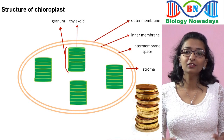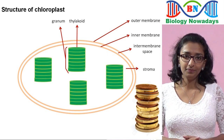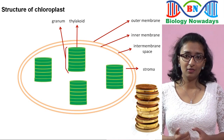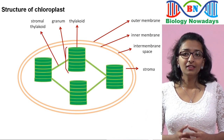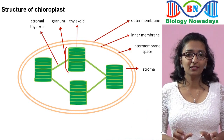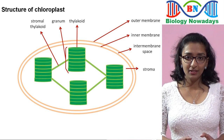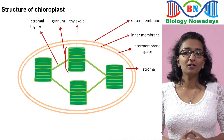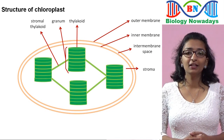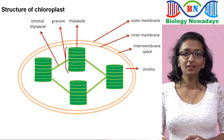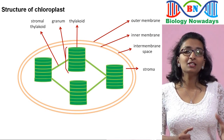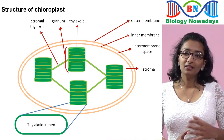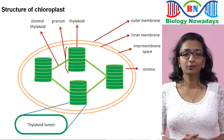These are also called granal thylakoids. There is another type of thylakoids called stromal thylakoids; they join the granum stacks together and make the thylakoid membrane network a single compartment. Stromal thylakoids are also called stromal lamellae or frets. The space within the thylakoids is called the thylakoid lumen, which is filled with a fluid.